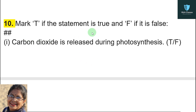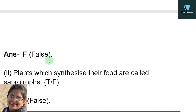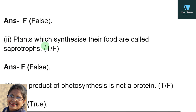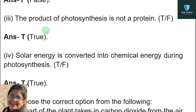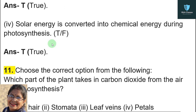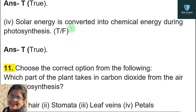Question number ten — mark T if the statement is true and F if it is false. Write the full word true or false. Carbon dioxide is released during photosynthesis — false. Plants which synthesize their own food are called saprotrophs — false. The product of photosynthesis is not a protein — true. Solar energy is converted into chemical energy during photosynthesis — true.